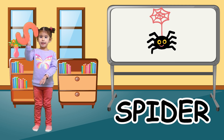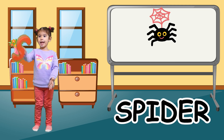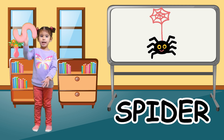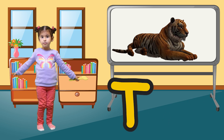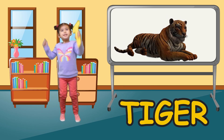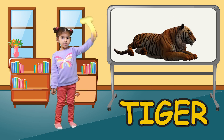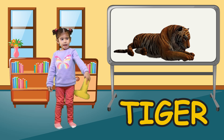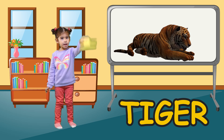S is for spider. S, spider, S, spider, S, spider. T is for tiger. T, tiger, T, tiger, T, tiger.